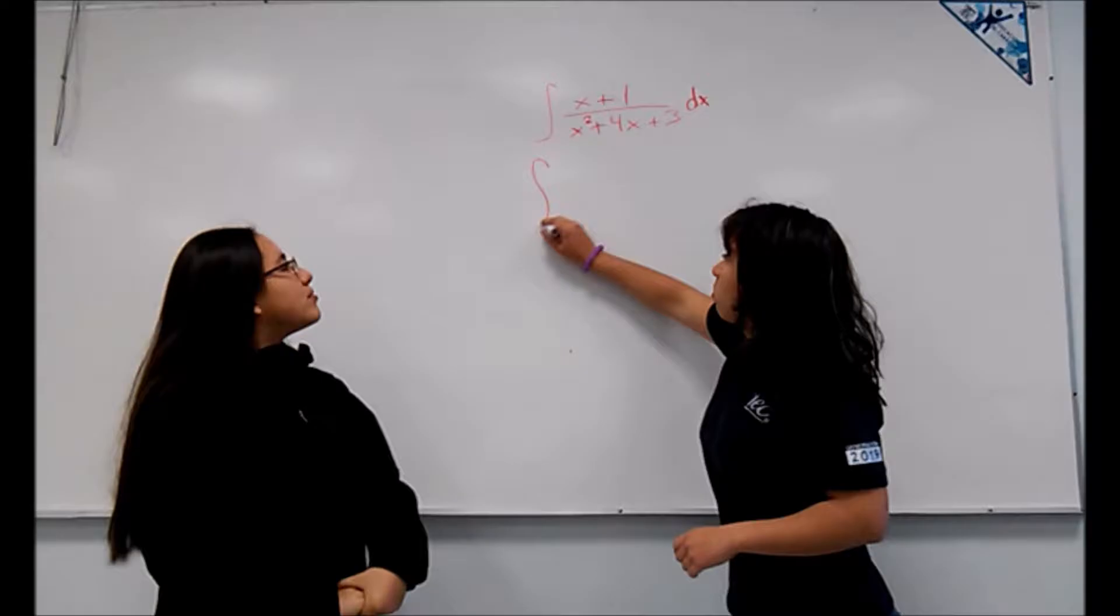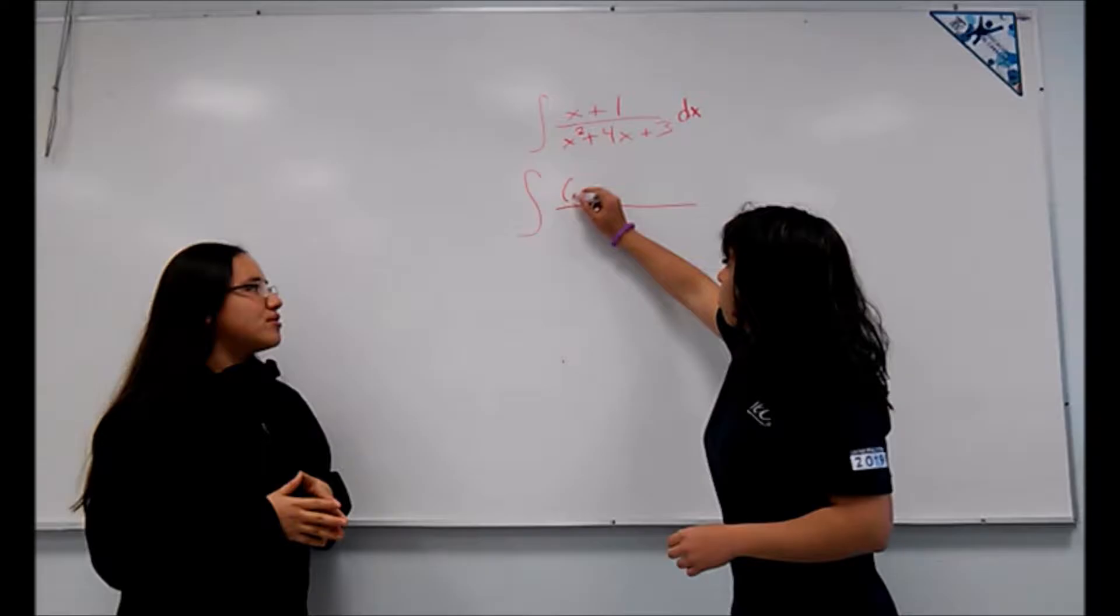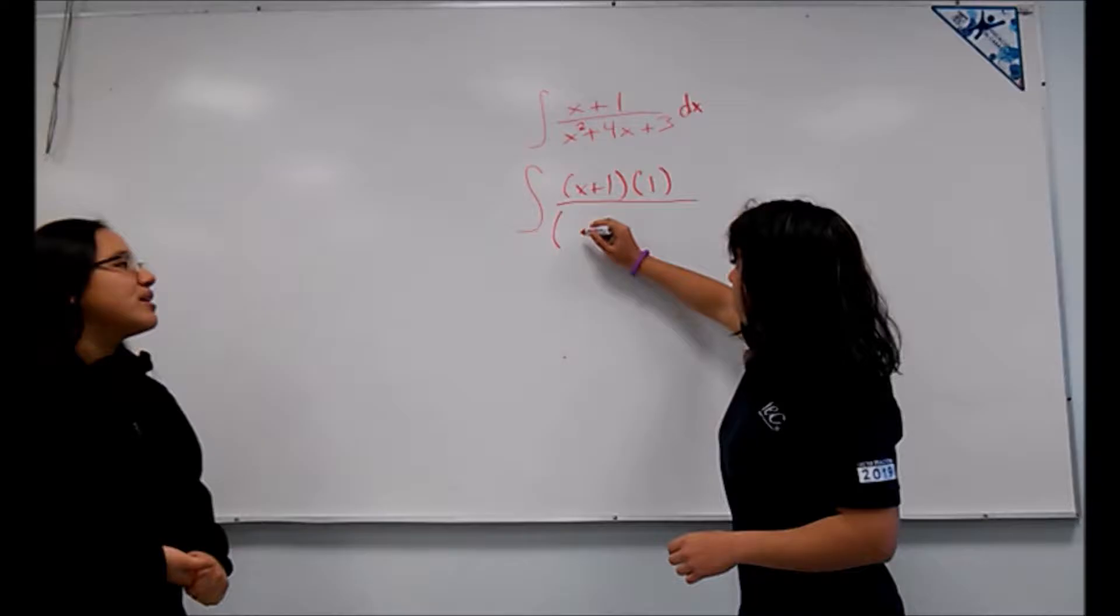Our first function is the integral of x plus 1 divided by x squared plus 4x plus 3. The first thing we've got to do is get the common factors.